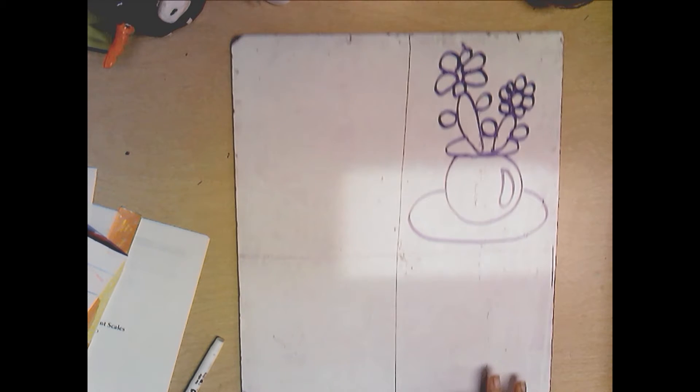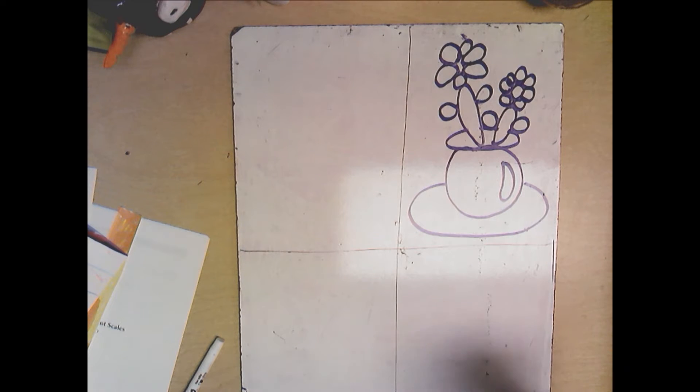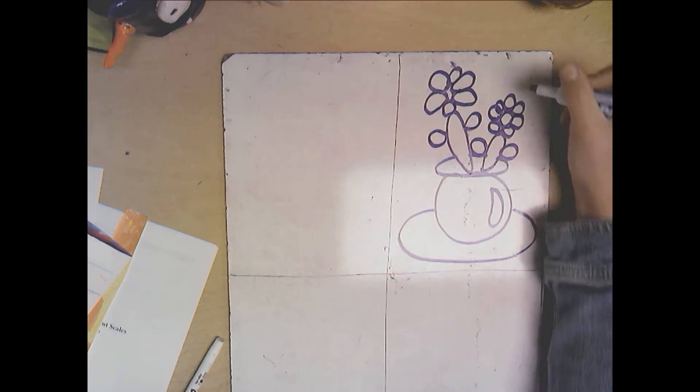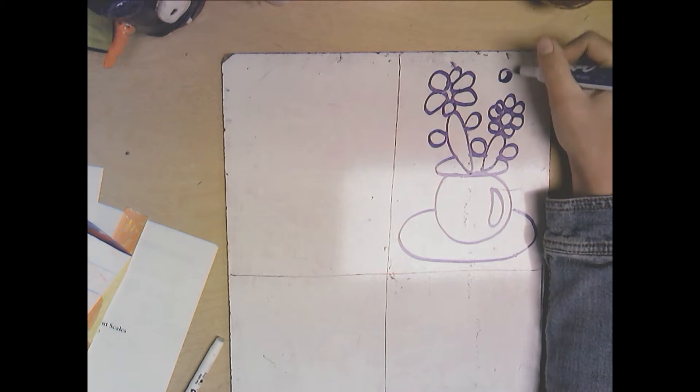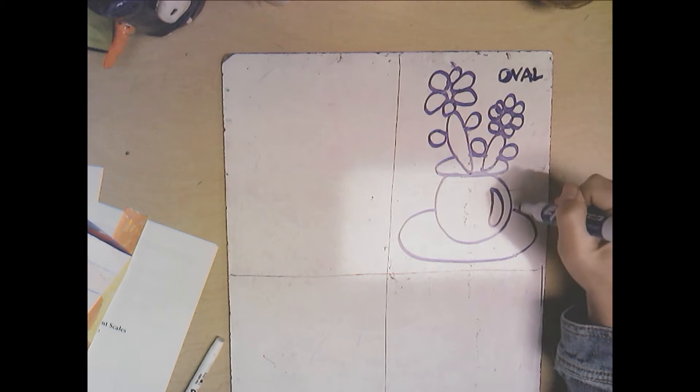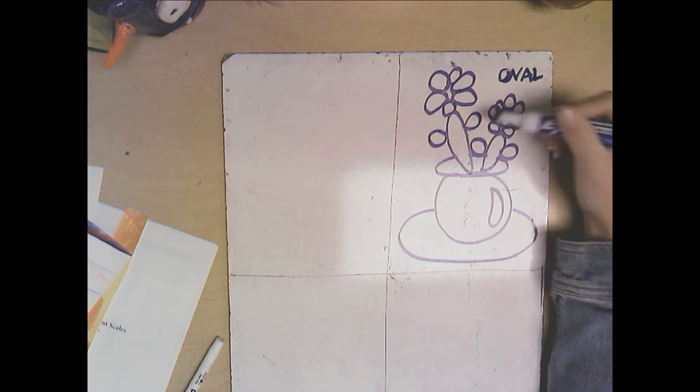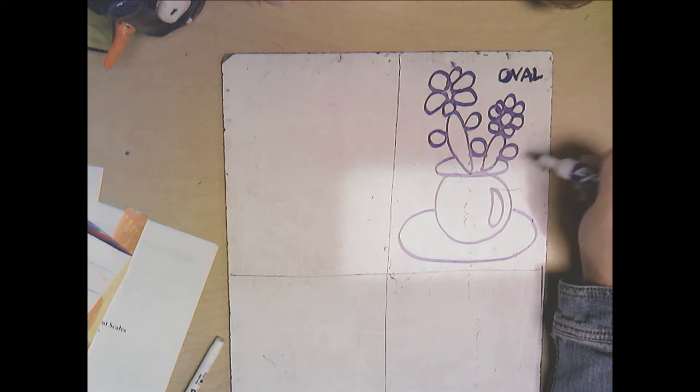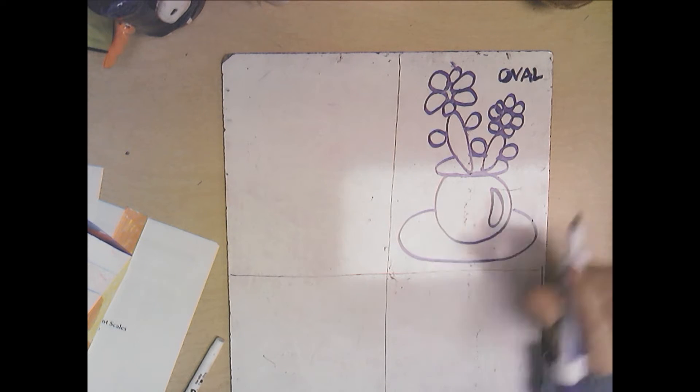All right, so here I am practicing on a dry erase board and I'm working within limitations. I asked you to pick a shape and to create a drawing using that shape only. So this shape here is oval. I made an oval vase, oval stems for the flowers, oval petals, oval leaves, and even an oval tabletop.